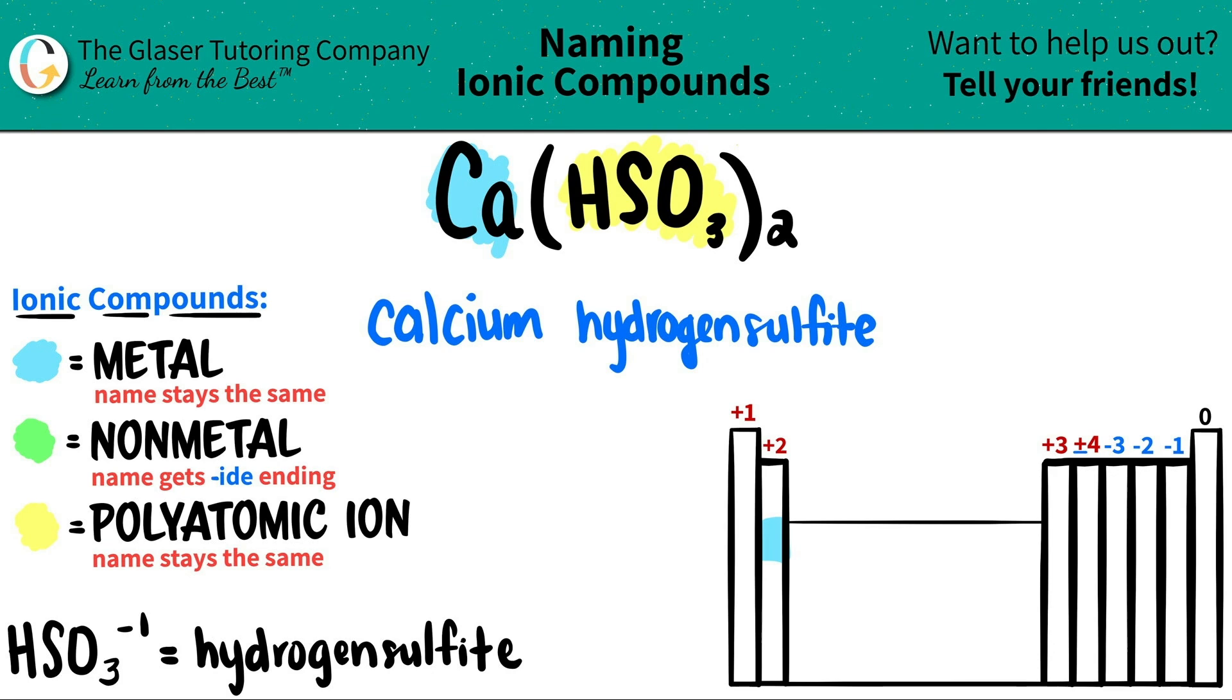So Ca(HSO₃)₂ is just calcium hydrogen sulfite or calcium bisulfite, whichever one you prefer.